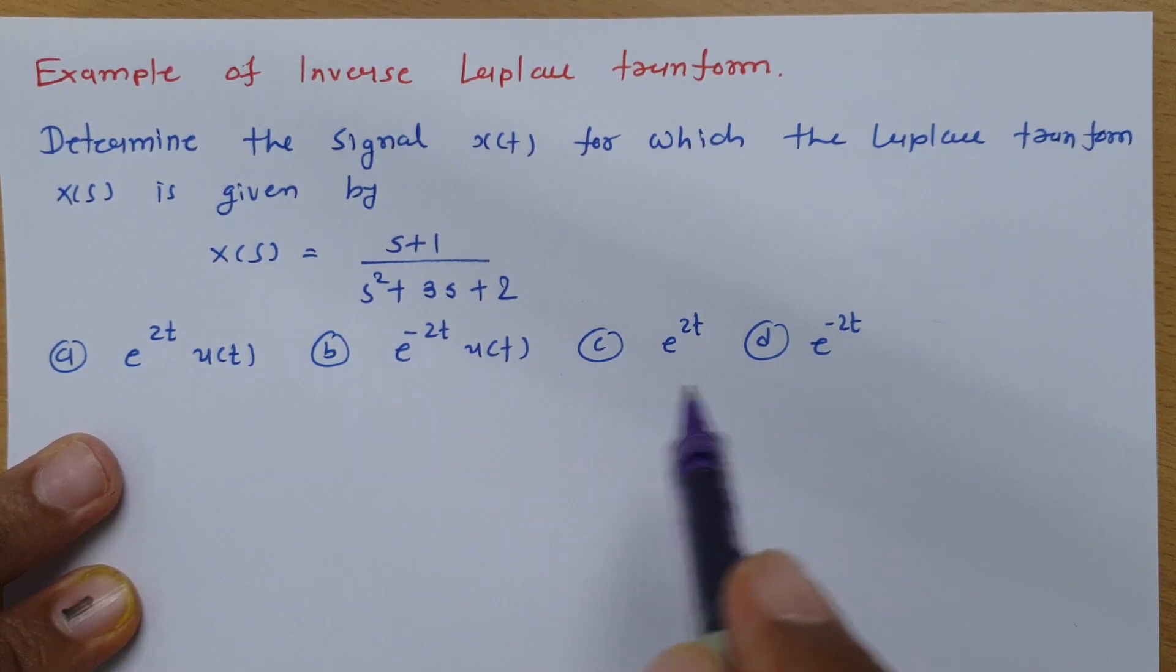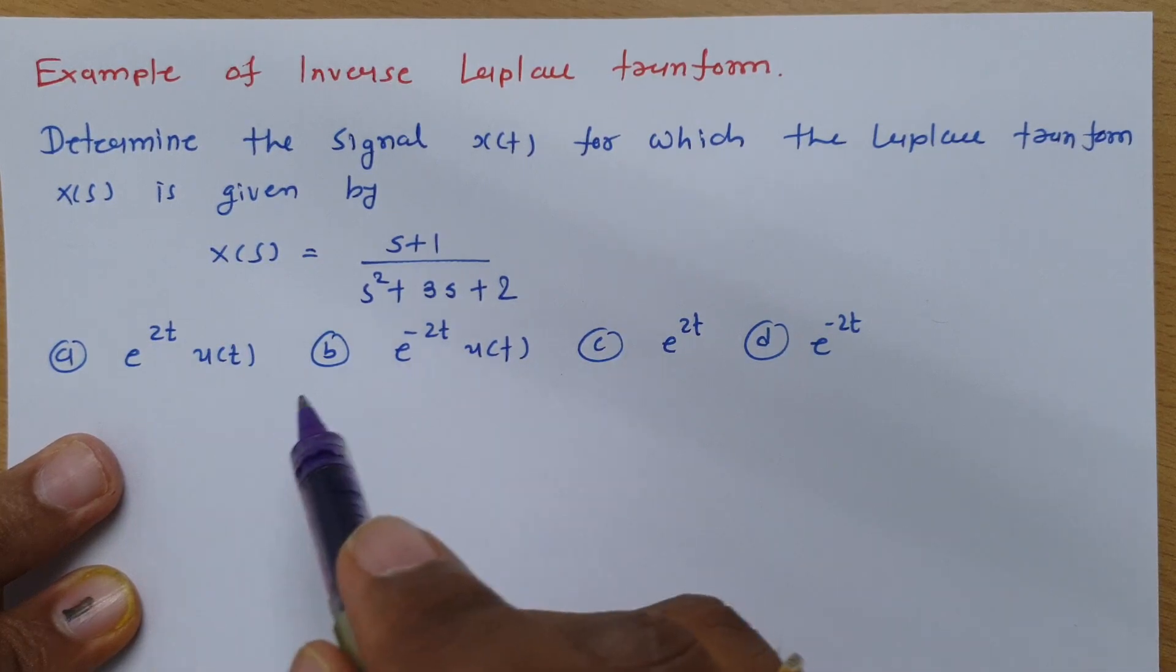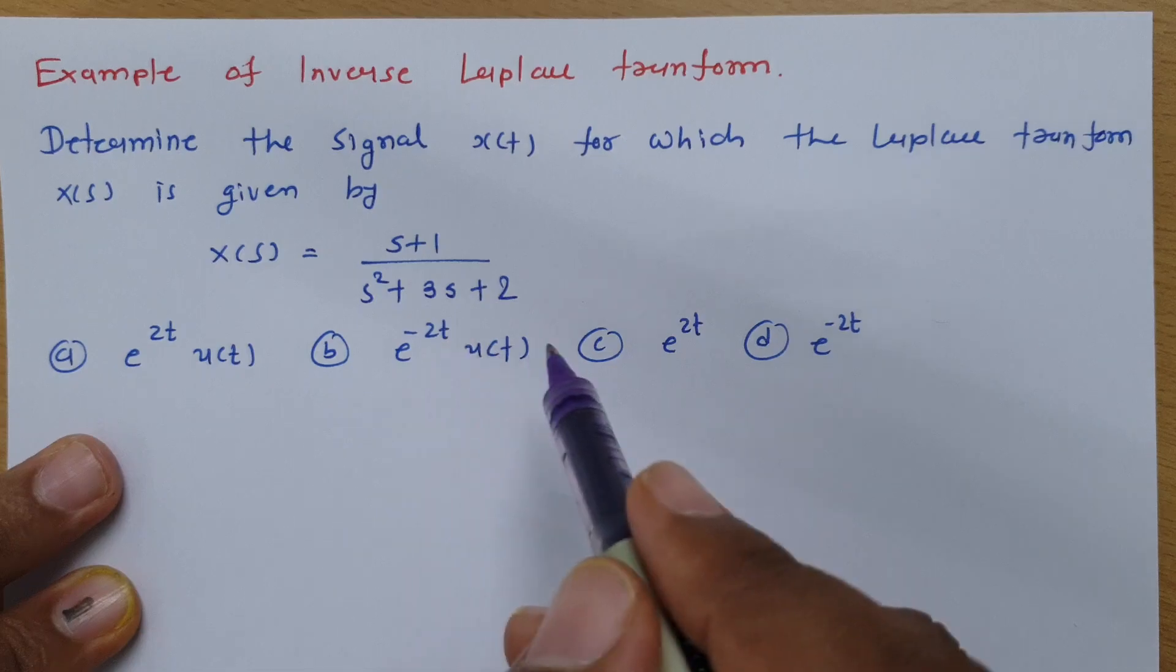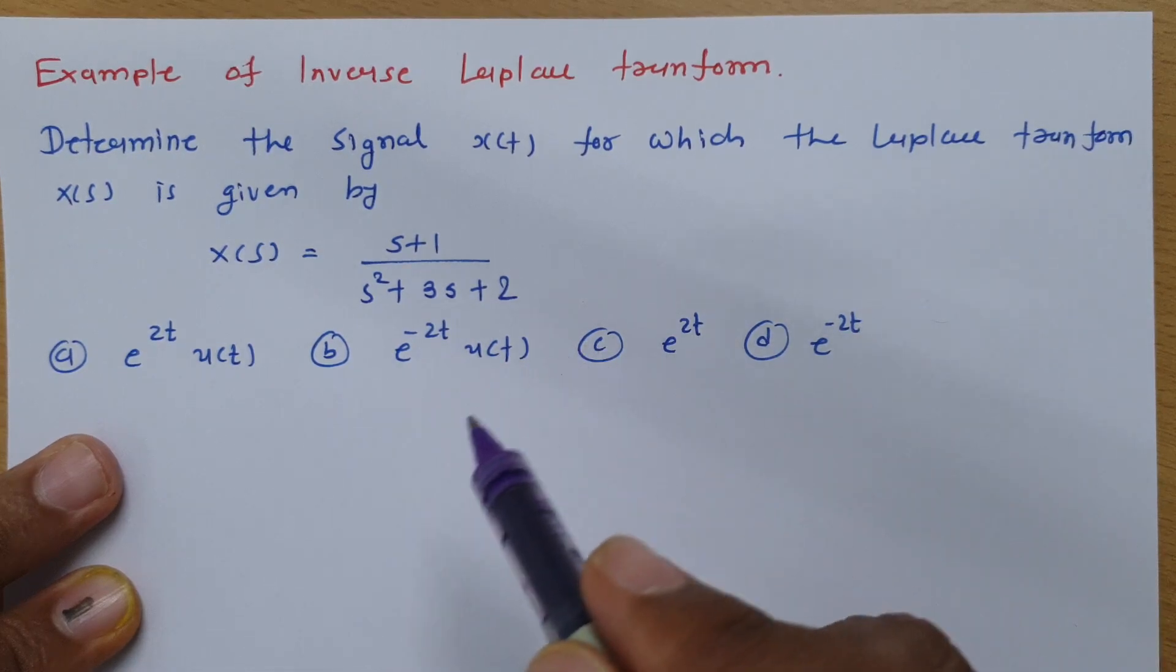Now if you observe, four options are there and all four options have e^(2t)u(t), e^(-2t)u(t), e^(2t), and e^(-2t) given.